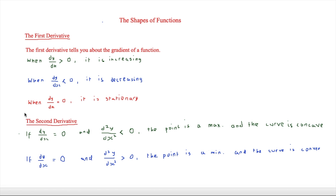We can also use the second derivative. When dy/dx is equal to zero, we use the second derivative to work out if the point is a maximum, which means the curve is concave. Concave has a maximum point up here — it looks a little bit like a cave. Then there's convex, which is when the point is a minimum — it looks like this, with a minimum point there.